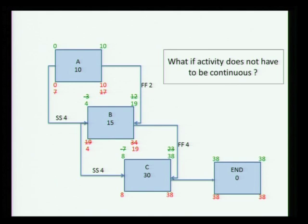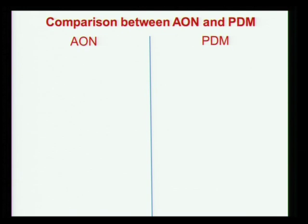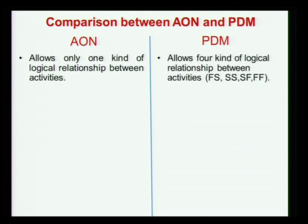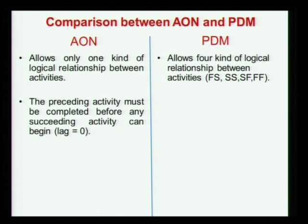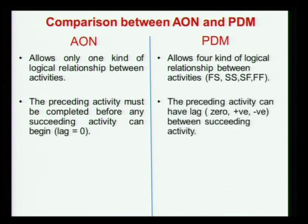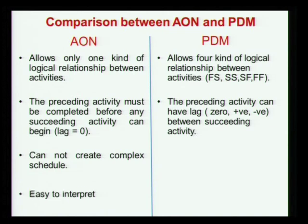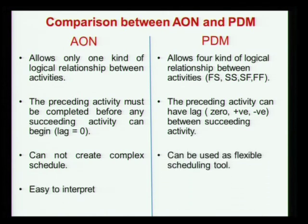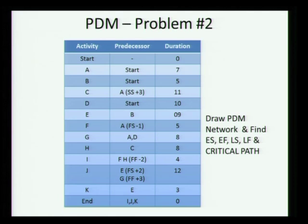We will discuss more on these issues as we get into tools and software packages. If we do a comparison between the two: AON allows only one kind of relationship, while PDM allows three additional types. With AON, the preceding activity must be completed before any succeeding activity can start, whereas PDM allows lags and leads. AON cannot create complex schedules but is easy to interpret; PDM offers flexibility but can sometimes be difficult to interpret. I will give you a problem to work on and we will solve it in the next class.